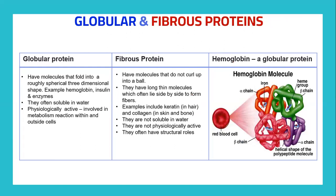Now let's look at globular and fibrous proteins. Globular proteins have molecules that fold into a roughly spherical three-dimensional shape. Examples include hemoglobin, insulin, and enzymes. They are often soluble in water, physiologically active, and involved in metabolism reactions within and outside the cell. Meanwhile, fibrous proteins have molecules that do not curl up into a ball — they have long thin molecules which often lie side by side to form fibers. Examples include keratin in hair and collagen in skin and bone. They are not soluble in water, not physiologically active, and often have structural roles.